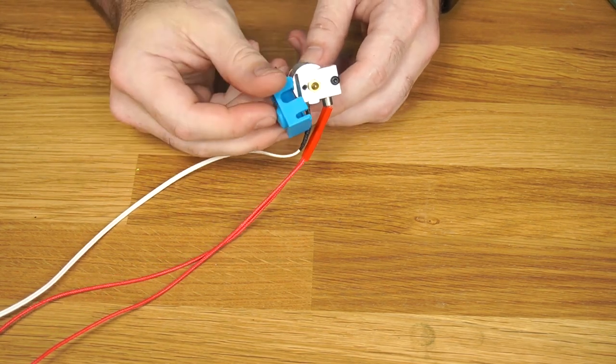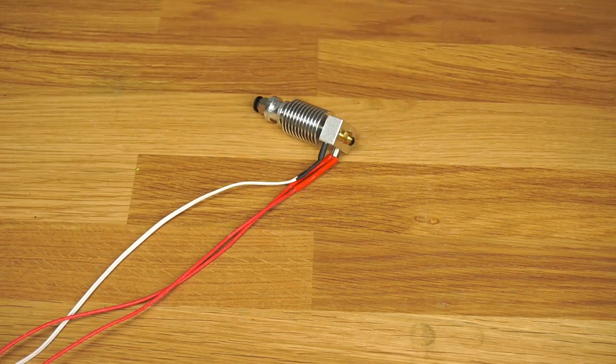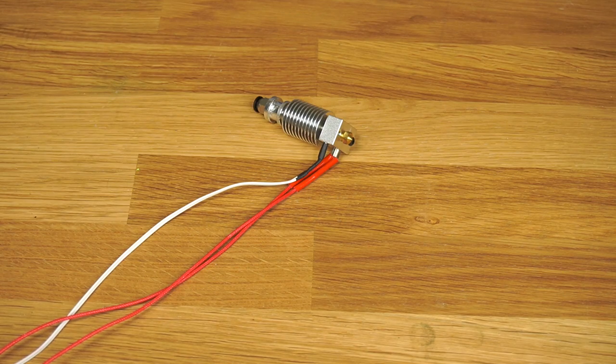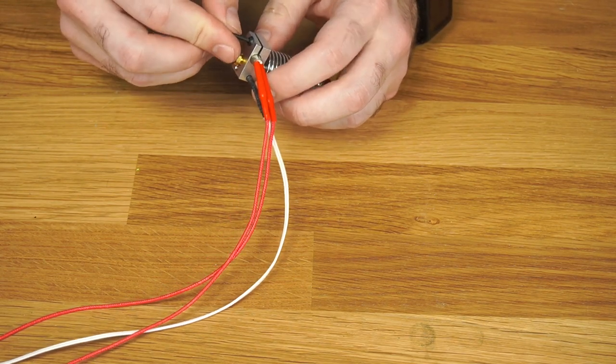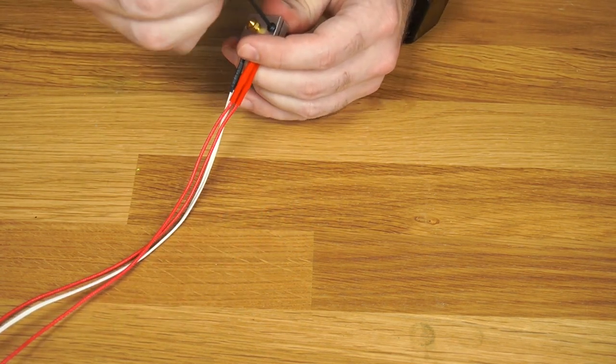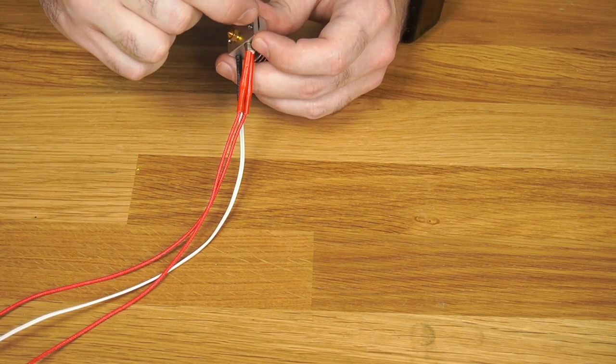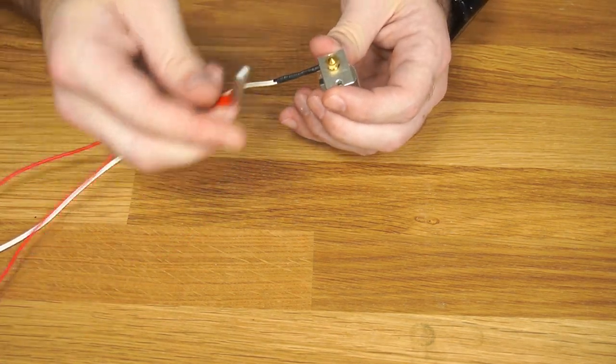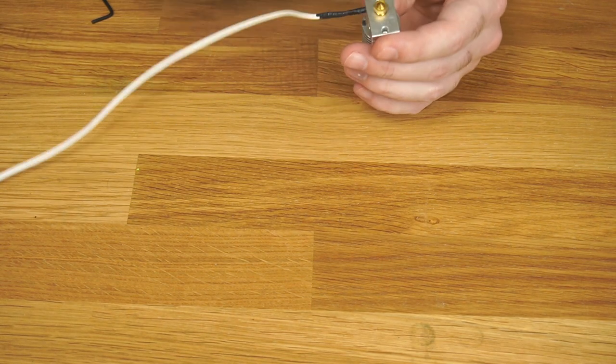So first step, we're going to take the sock off. We're going to get a two millimeter Allen wrench like this, and we'll take the heater cartridge out. We'll put this aside for later, and this should just slide right out. That's your heater cartridge. We'll put this aside so we don't damage the wiring. The wiring's pretty fragile.